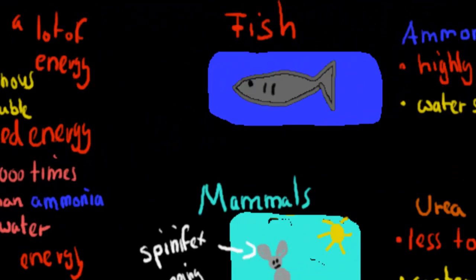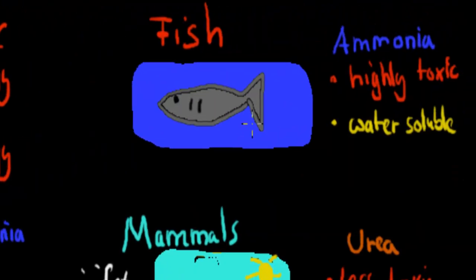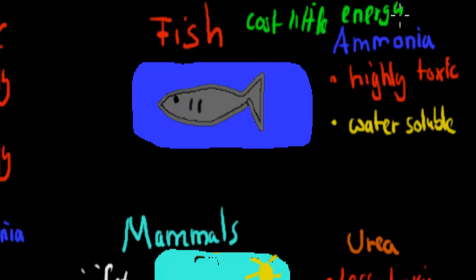I'm going to explain why we need to get rid of it and how. Fish live in a very aquatic environment with lots of water around them, and they produce ammonia. The benefit of ammonia is that it costs little energy. They don't have to waste energy making urea or uric acid. Obviously the negative is that ammonia is very poisonous, it's deadly.